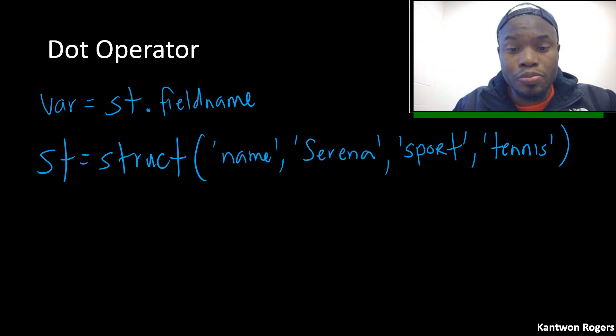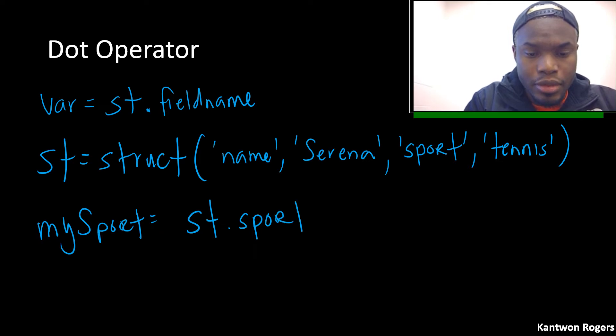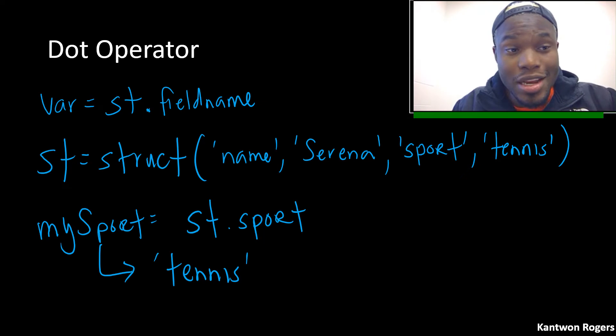And so now if I wanted to figure out what sport this person plays and save that inside some variable, I can say let's create a variable called my sport. We can say the structure, which is st dot sport. In this case, my sport would be the string tennis. It's just that easy using the dot operator, similar to how we use it to create a structure.